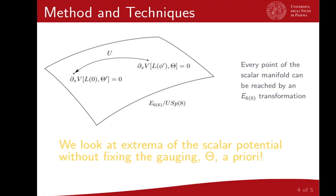Given that the manifold is E6 over USp(8), in general there are 42 scalars, which are too many to deal with. Therefore, in addition to the procedure just described, we also looked for vacua with certain residual symmetries. These reduce the number of independent variables to a manageable amount.